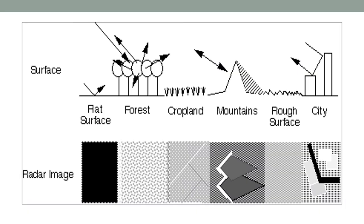The following graphic gives an idea of how radar interacts with the surface it is imaging and what type of image you end up getting. A flat surface produces a dark radar image. A forest, depending on radar wavelength, may cause the signal to bounce around before returning, producing a speckled image. Cropland with rows shows distinctive patterns. A mountain may have a shadow behind it because the radar signal is occluded from the region behind the mountains. Urban structures with definite geometry are also reflected in the image.